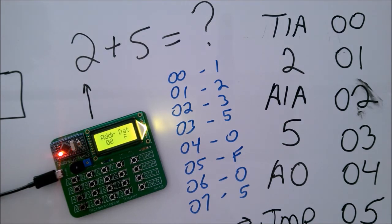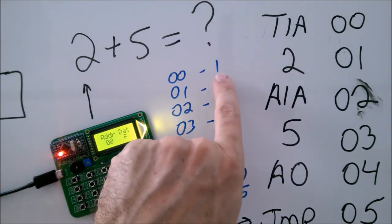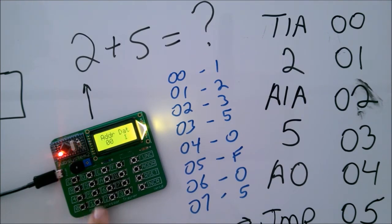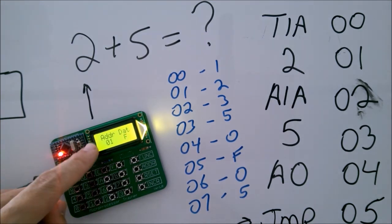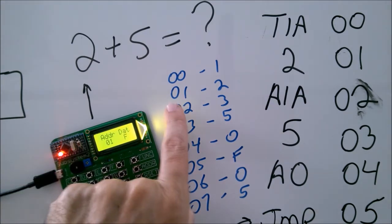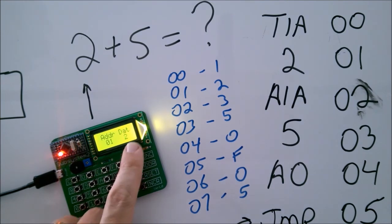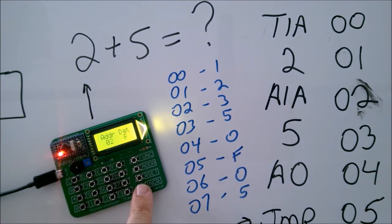So the first command at memory location zero is going to be one. So we put in our one. That doesn't enter the command yet. We actually have to press increment. Increment enters the command and ups the address, the memory location, by one. So now you can see we're at zero, one. Now we need to put a two in that location. So we put our two for data and we increment. That puts the two in.